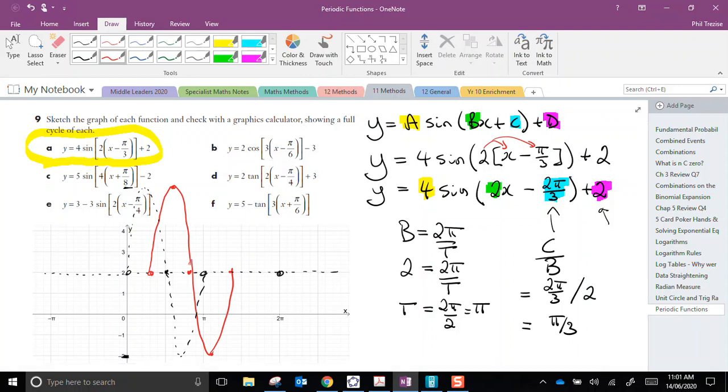My graph will actually be here. That's a full cycle. That's what the question wanted to show, a full cycle of each graph. Of course, the graph would continue in both directions.